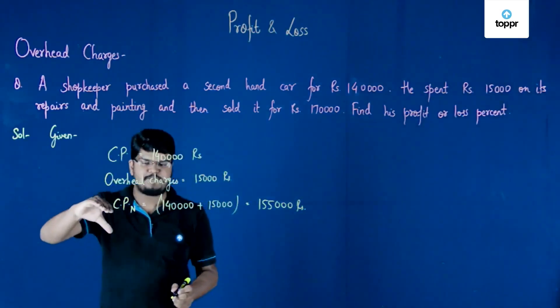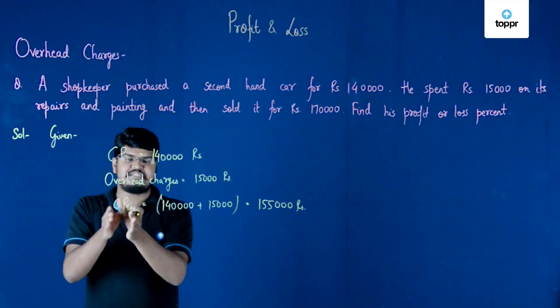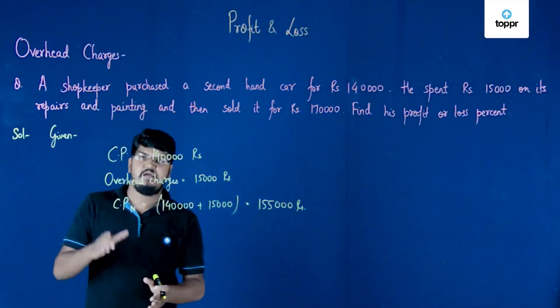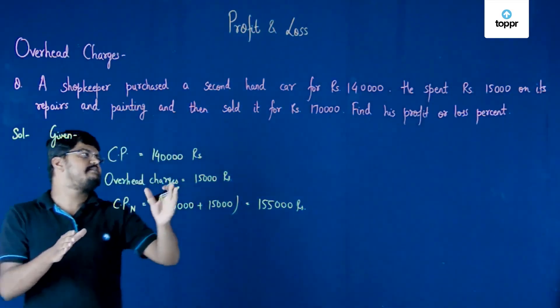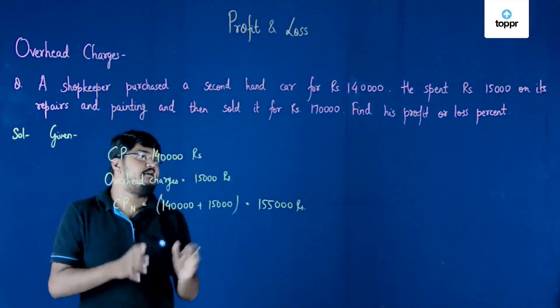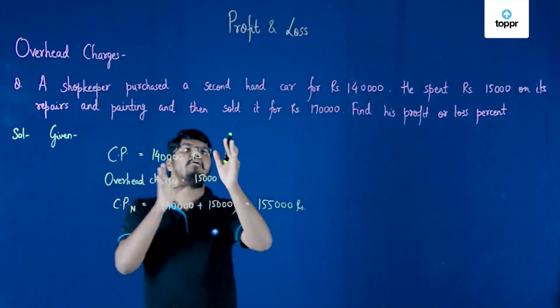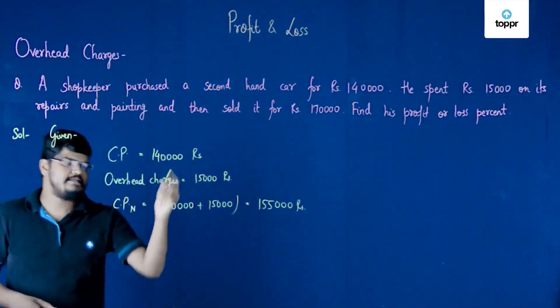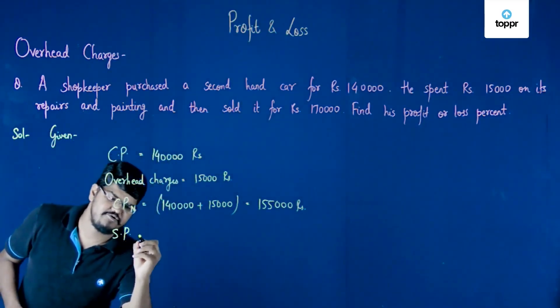So now you have your effective cost price which is considered as the new cost price here, and the unknown thing is the profit or loss percent. Before that, you can see that we have also been given the selling price, which is 1 lakh 70,000 rupees.